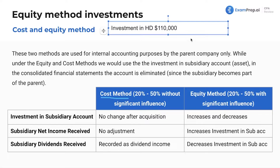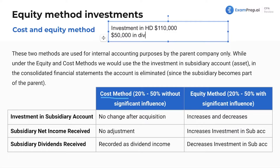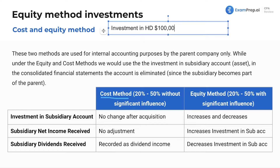When Home Depot pays out dividends — let's say $50,000, paying out all of that net income as dividends — times 20% again, that's $10,000. We would reduce our Investment in Home Depot back to $100,000. That's the difference. Under the equity method, net income you receive increases your investment, and you can think of dividends as a return of capital — it reduces your investment account. You could take those dividends and immediately reinvest to keep your balance up. Return of capital and increase in capital both affect your investment account.